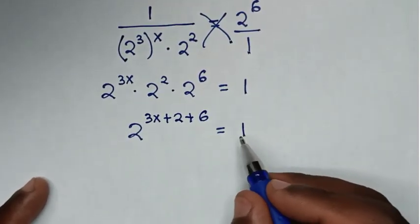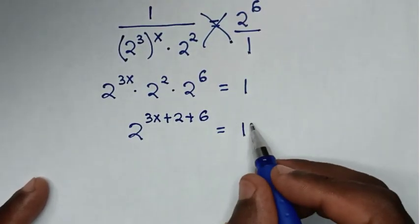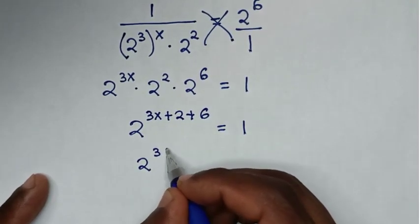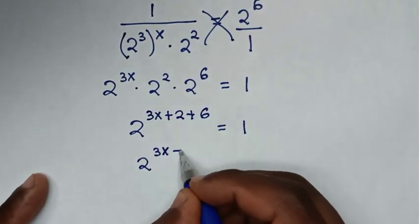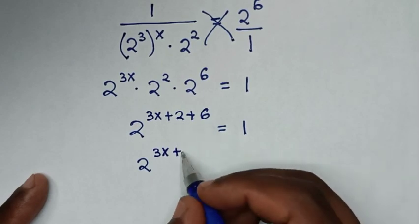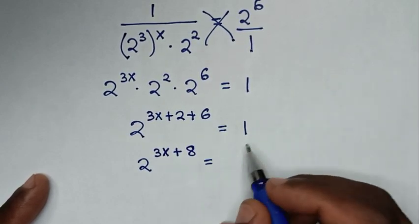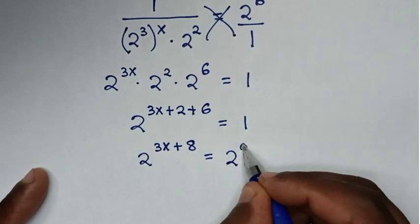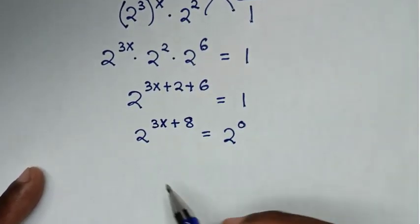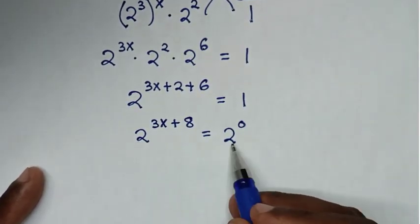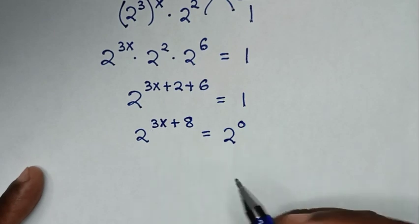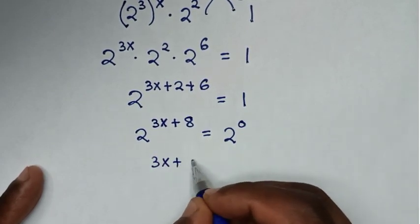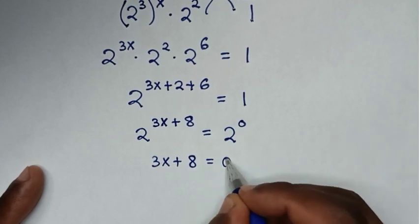For the right side, 1 written in base 2 is 2 to the power of 0. So we have 2^(3x + 2 + 6) equals 2^0. Since the bases are the same, we compare exponents: 3x plus 8 equals 0.